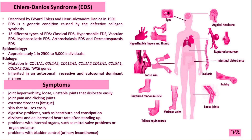COL1A1 codes for one of the two alpha chains of type 1 collagen, the most abundant collagen in the human body. Type 1 collagen is a key structural component of many tissues including the skin, bone, tendons, and the sclera — the white part of the eye. It provides strength and rigidity, enabling tissues to withstand stretching. The protein produced by COL1A1 forms the pro-alpha 1 chain, which combines with other pro-alpha chains to form a triple helix — the functional unit of type 1 collagen — which assembles into fibrils and fibres that give strength to connective tissues.